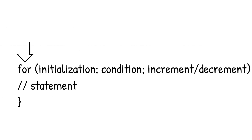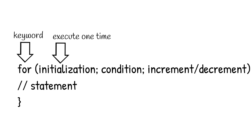Let's first understand the syntax of the for loop. The keyword is 'for', and then you have three statements inside. The first part is initialization, where you initialize your variable to start your for loop. You put a semicolon between each statement.